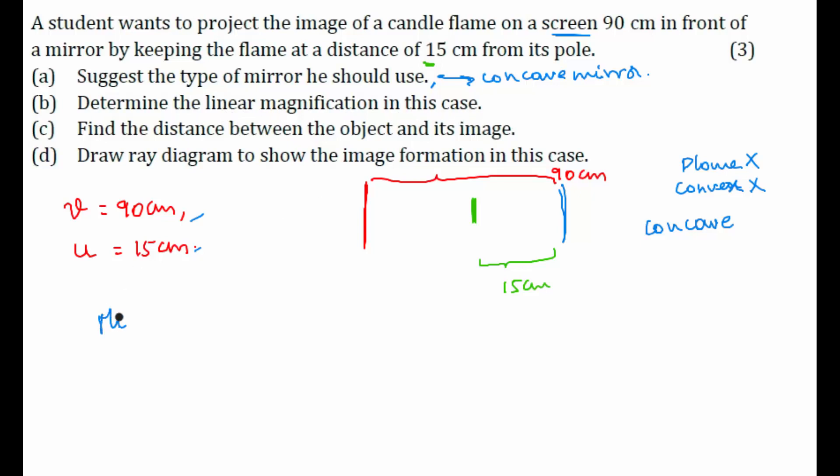We know that magnification in a mirror will be equal to minus v by u, right? Minus v by u. If we introduce sign convention here, v, we measured it in this direction and also u is in this direction. So, we have to take it as negative here and negative here. So, v is minus 90 cm and u is minus 15 cm. Equal to minus of minus 90 by minus 15.